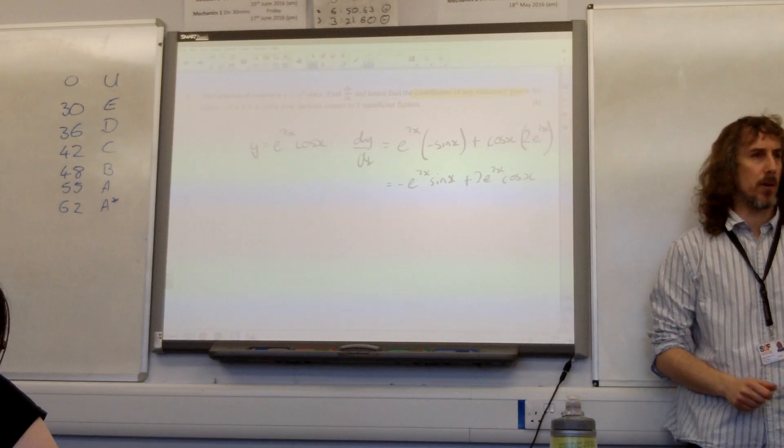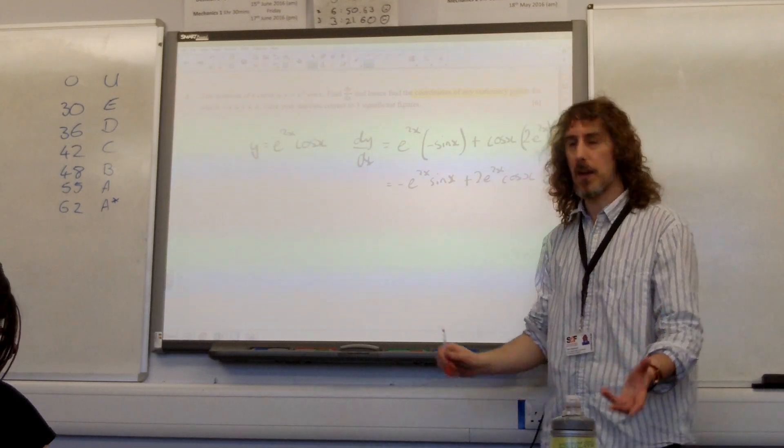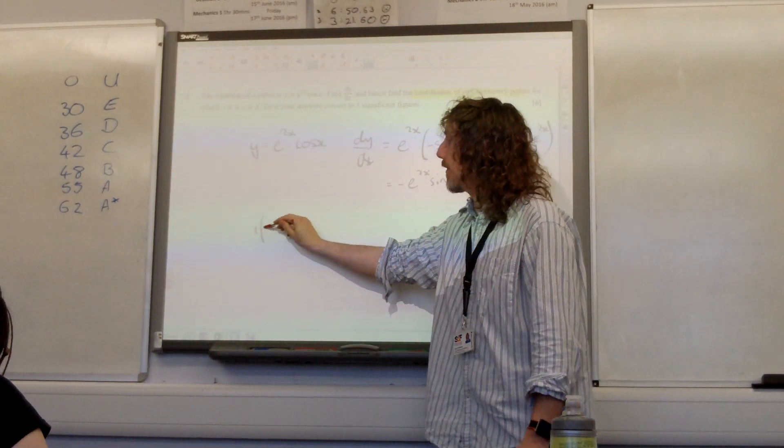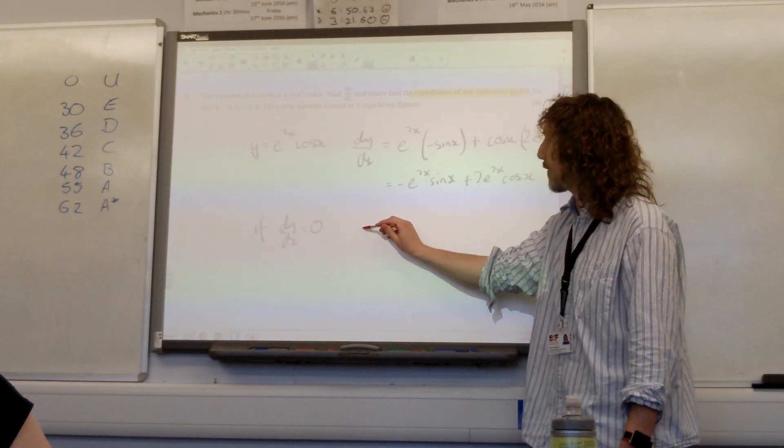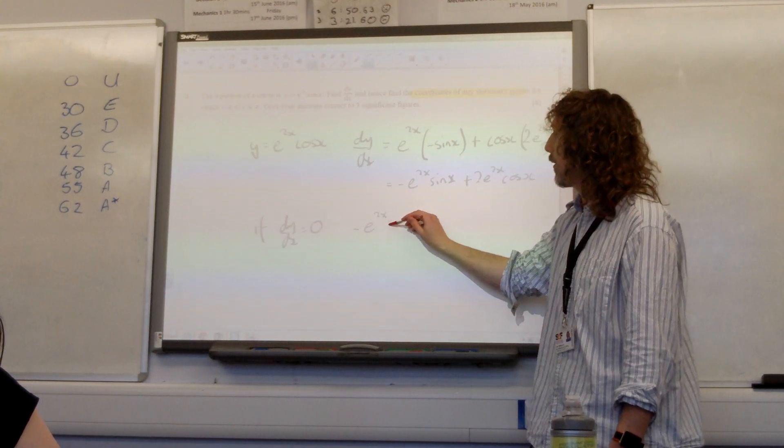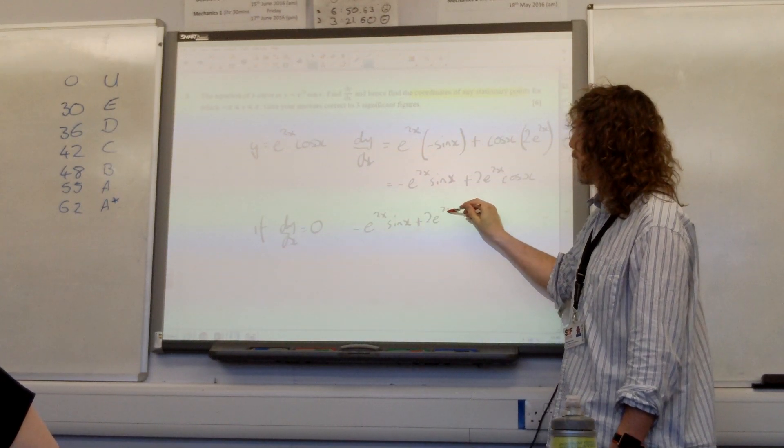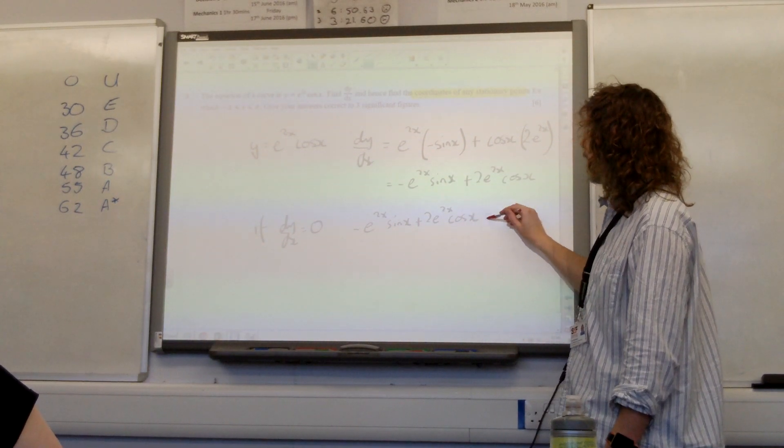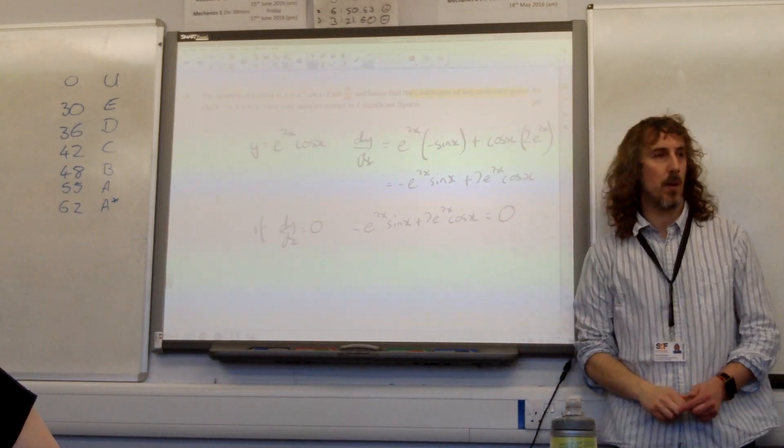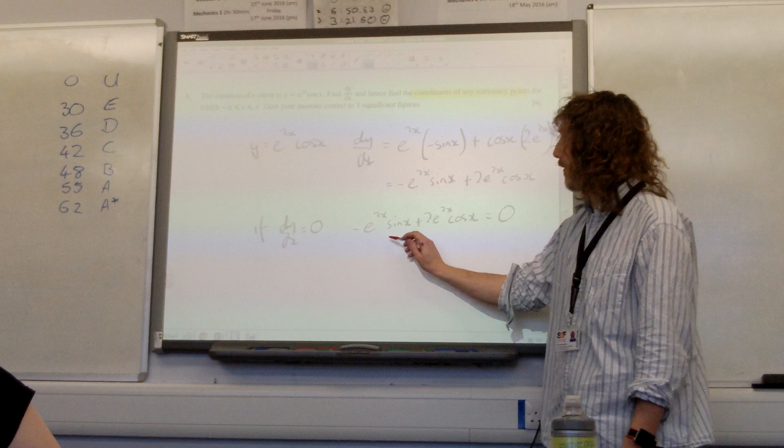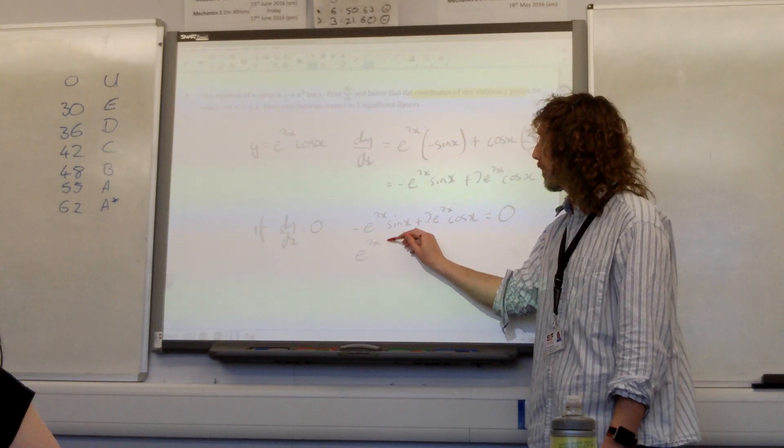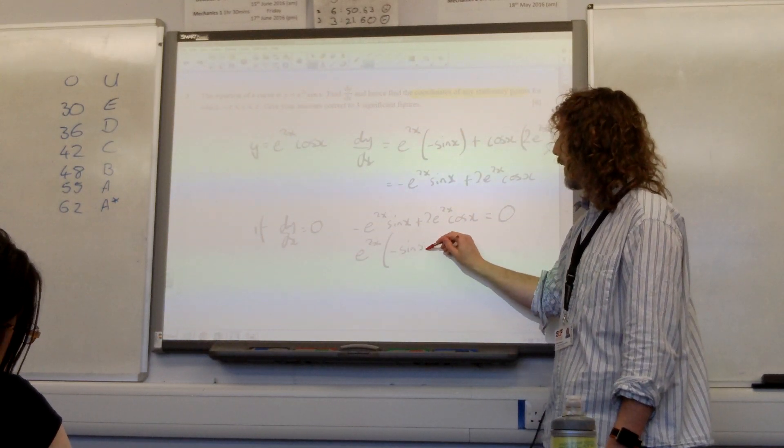We're looking for stationary points. So if we have a stationary point, we're interested in what happens when dy/dx is zero. So that means this expression has to be equal to zero. At that point, of course, we want to factorize it. We've got a common factor of e^(2x).